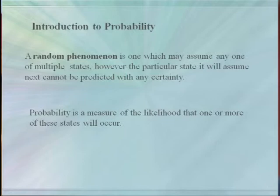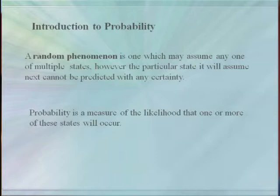So what do we mean by a random phenomenon? Random phenomena is one which may assume any one of multiple states, but the particular state that's going to assume next cannot be predicted with complete certainty. We don't know for certain what will happen next, but probability gives us tools to determine what is likely to occur.